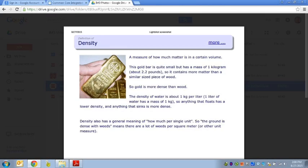So let's talk about density. We've already talked about it, but here's a picture example. This gold bar is quite small but has a mass of one kilogram, so it contains more matter than a similar-sized piece of wood. So if I had a piece of wood that same size, gold is actually going to be more dense because even though that piece of wood and the gold had the same volume, gold is going to be heavier. It has more mass, so that makes it more dense.